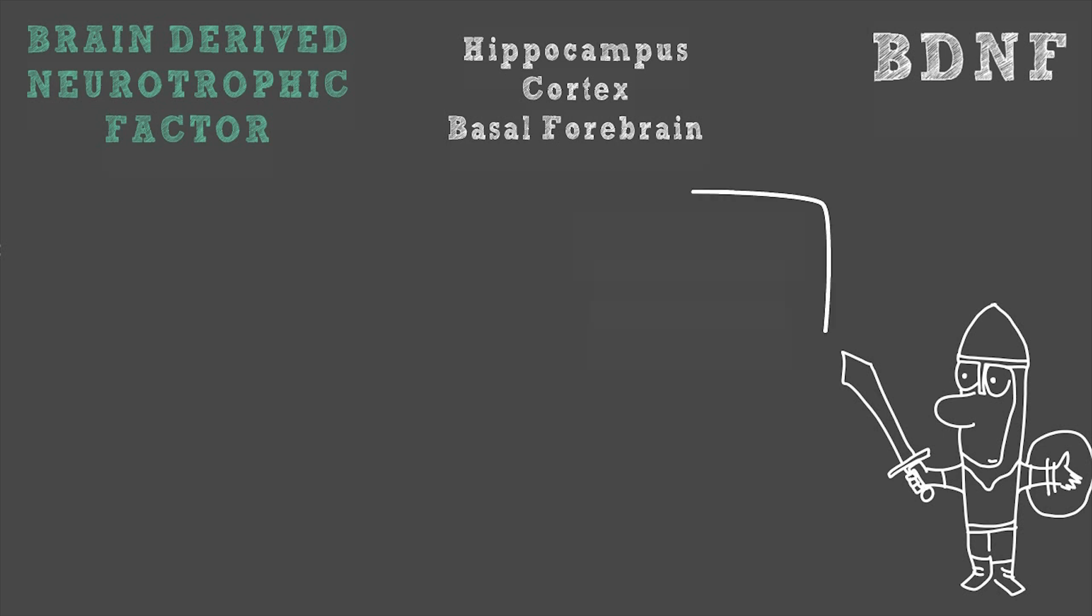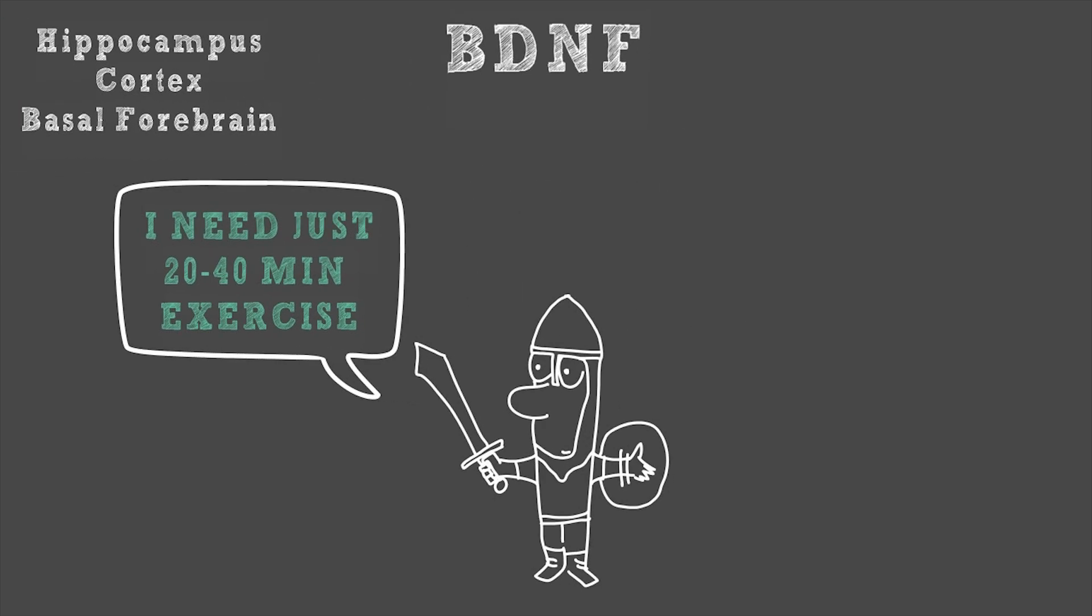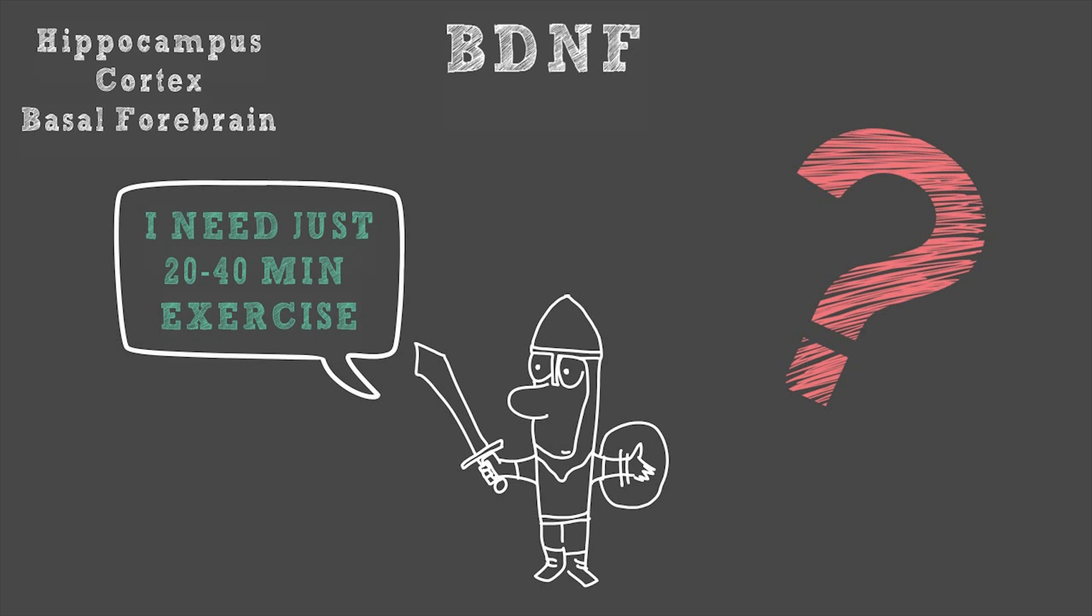A 2013 study showed that only 20 to 40 minutes of aerobic exercise increased the BDNF in the blood by around 32%. So the reason why exercise is a key trigger for all kinds of positive effects in the brain, particularly learning, is because movement signals to the brain that something important is happening.